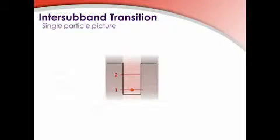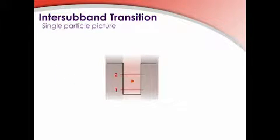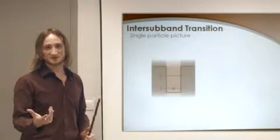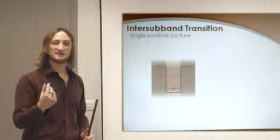Indeed, the usual picture of the intersubband transition is the following. An electron stands on the lower level of the quantum well. A resonant photon can be absorbed, exciting the electron to the second level. The electron can then re-emit a photon.